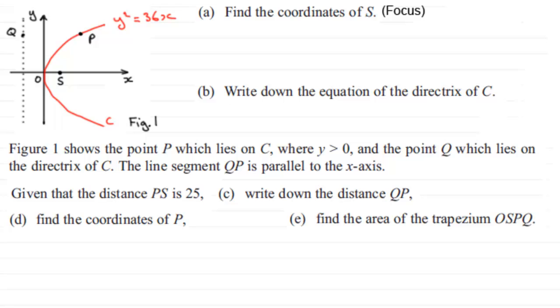Hi. Now, in this question on parabolas, we're given this curve C, this parabola C, with equation y² = 36x. And we're told that the focus of this parabola is at S. And in the first part of the question, we've got to find the coordinates of that focus S.